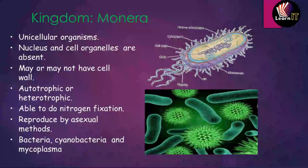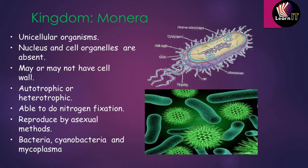The first kingdom is known as Monera. The first key point is that Monera organisms are unicellular, meaning they are made up of a single cell. The second point is that nucleus and cell organelles are absent, which means these organisms do not have a nucleus or cell organelles.